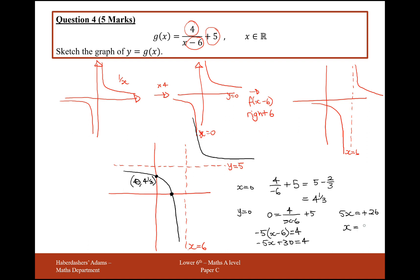So x is going to equal 26 over 5. So this coordinate here is going to be 26 over 5, 0.